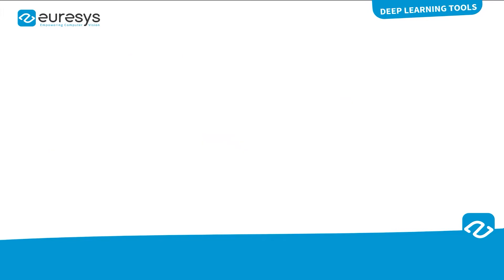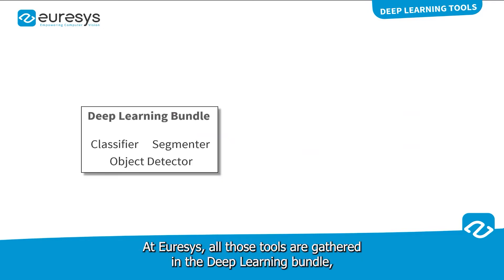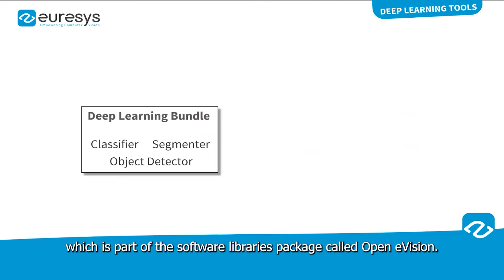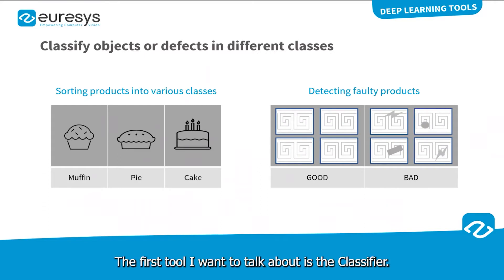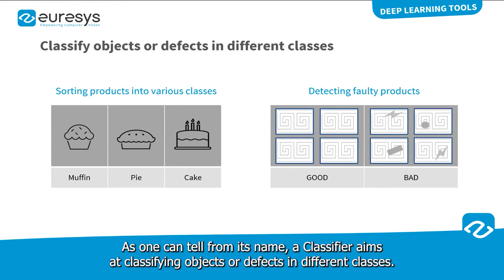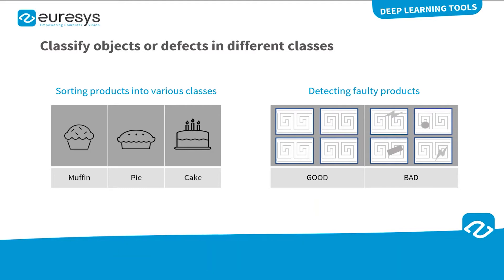There are basically three families of deep learning tools: classifiers, segmenters, and object detectors. The first tool I want to talk about is the classifier. As one can tell from its name, a classifier aims at classifying objects or defects in different classes. Classifiers are mainly used to sort products in various classes, for instance, muffins, pie, cakes, or to detect defective products.